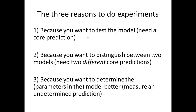The second reason is that you have two different models and you want to do an experiment to distinguish between them. For instance, like Einstein did in 1919 — he had two different ideas and wanted to do an experiment where he knew the outcome would allow him to distinguish between them. For that, you need well-determined predictions — the core predictions. Remember, in physics, when you know the parameters, all predictions are core predictions.